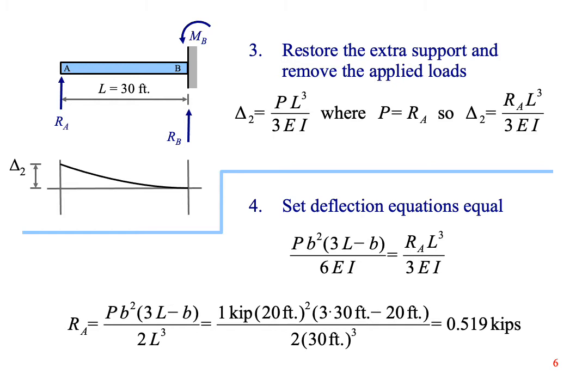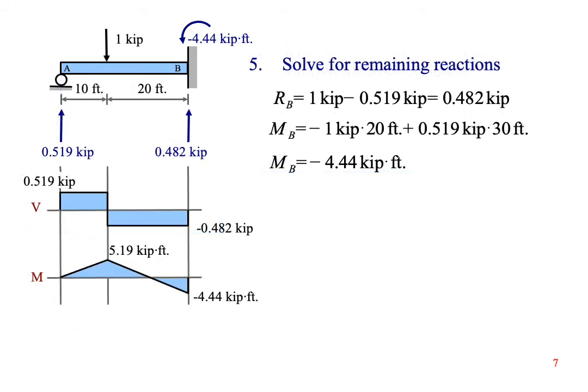Next, we set the two deflection equations equal to each other because we know that the actual deflection at this point is really zero. We solve for R sub A and the answer is 0.519 kips. We can use sum of the forces to find the reaction force R sub B. Then we can add up the moments to find M sub B.